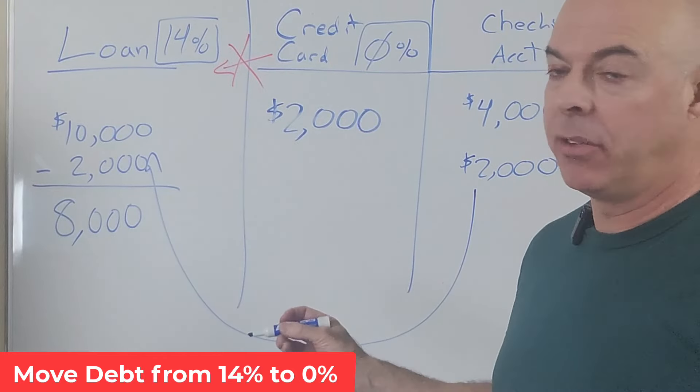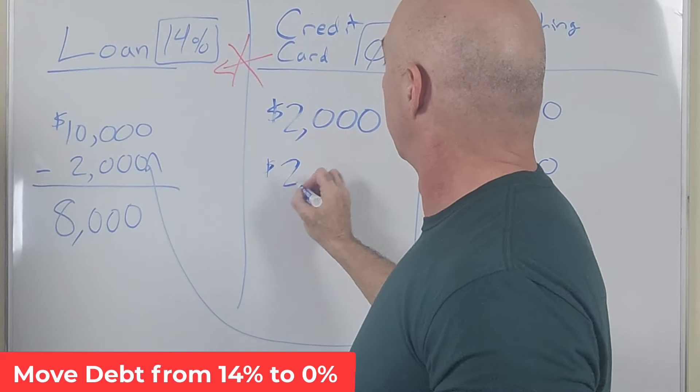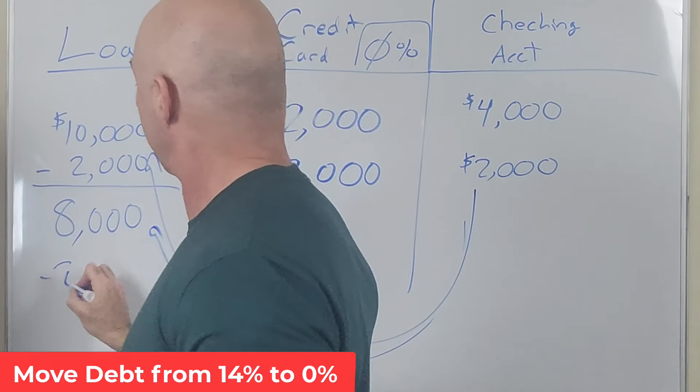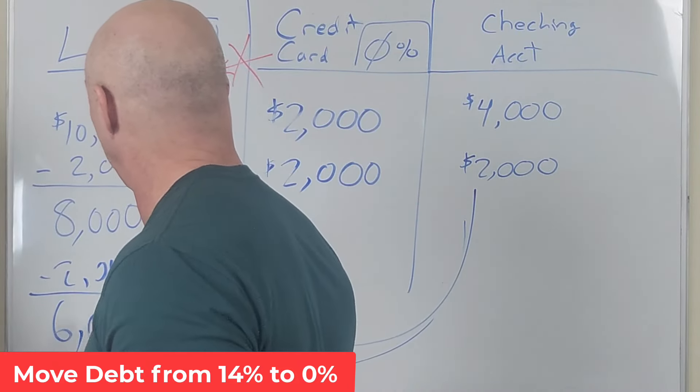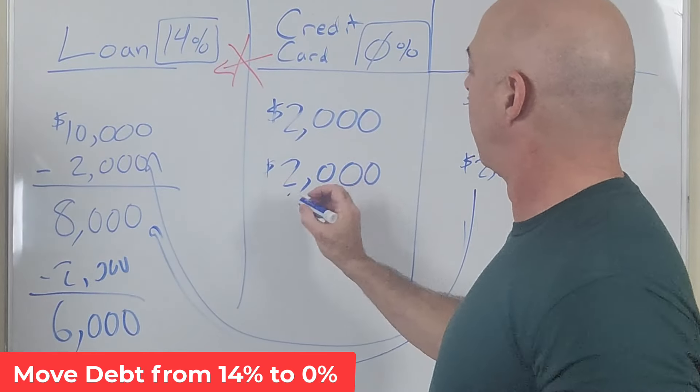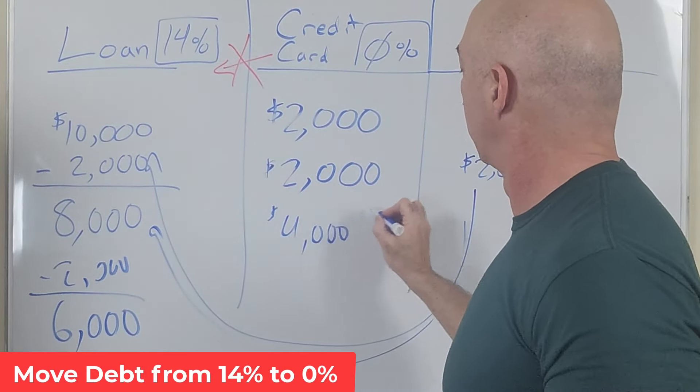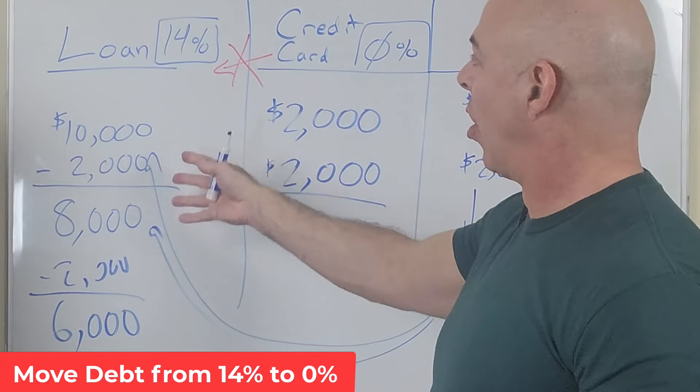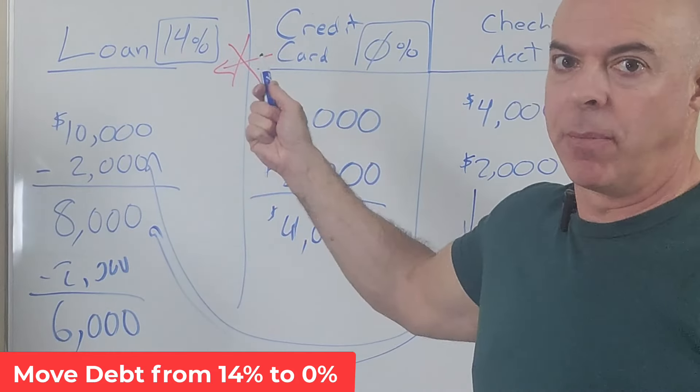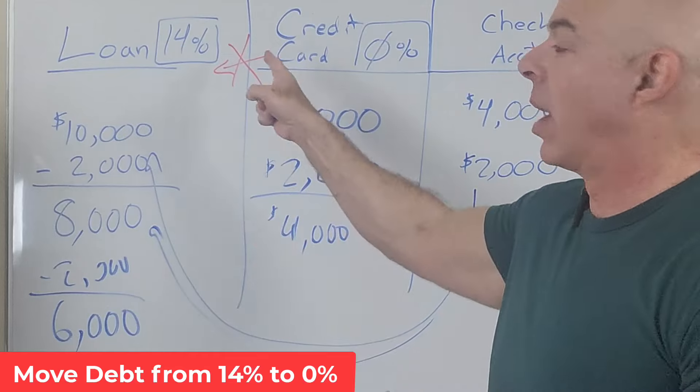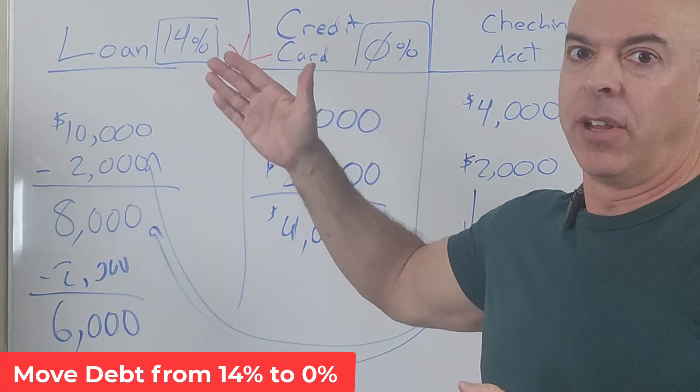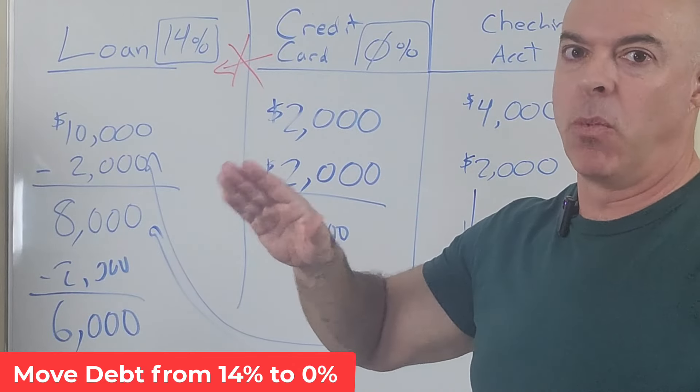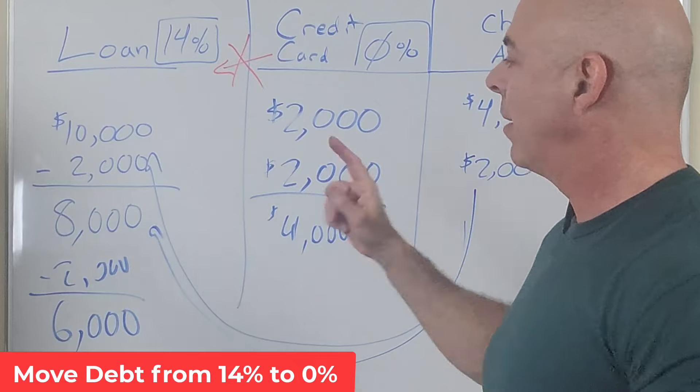You've effectively, now we haven't paid down any debt, we're just talking about how to get it off of one and on to another. 8,000 at 14 and 2 at 0 when it used to be 10,000 and nothing. You do this for a couple months. Every month that you do it, you charge another 2,000 and you move 2,000 again. And you end up with 6,000 on this one and 4,000 total on this one. So what have you done? You've effectively just moved your loan onto your credit card. You just did it in a roundabout way because they won't let you do it directly.